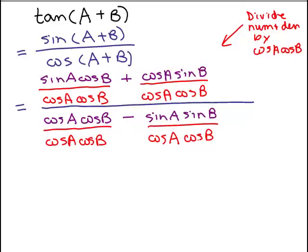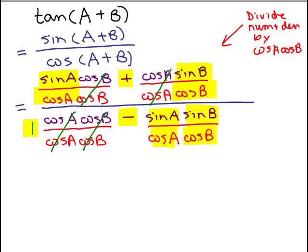Let's see if anything cancels. In the first fraction of the numerator, the cosine B's cancel. In the second fraction, the cosine A's cancel. In the first fraction of the denominator, both cosine A and cosine B cancel, so that just reduces to the number 1. In the second fraction, nothing cancels. So in the numerator I end up with sine A over cosine A, plus sine B over cosine B. In the denominator, I have 1 minus sine A cosine over cosine A, times sine B over cosine B.